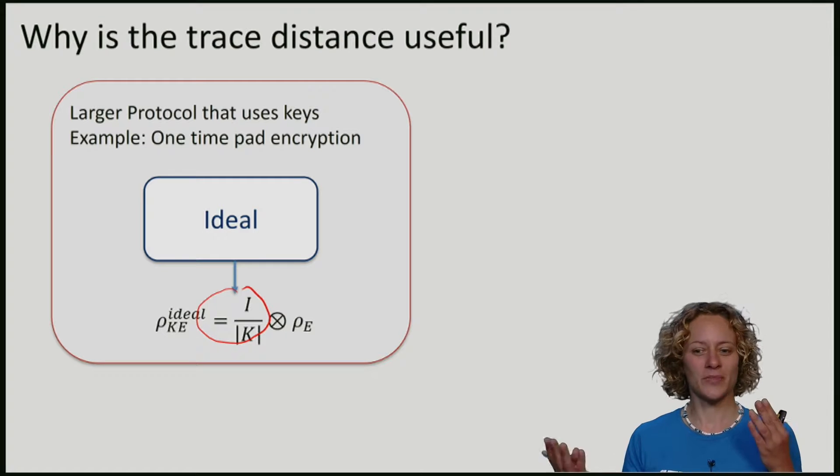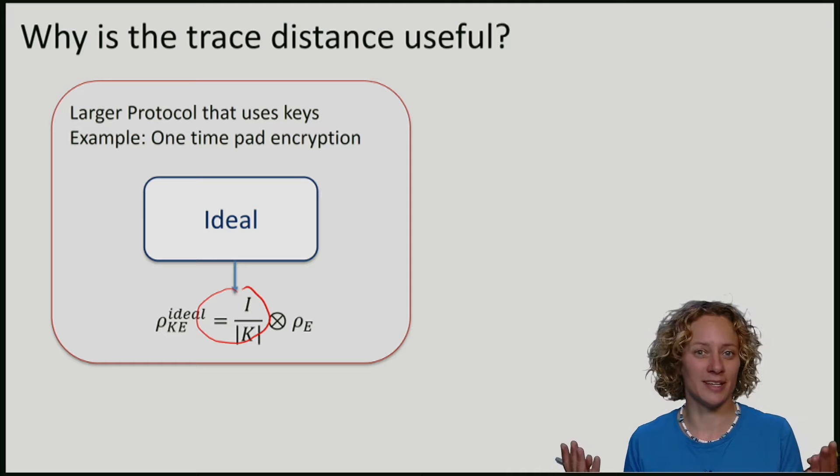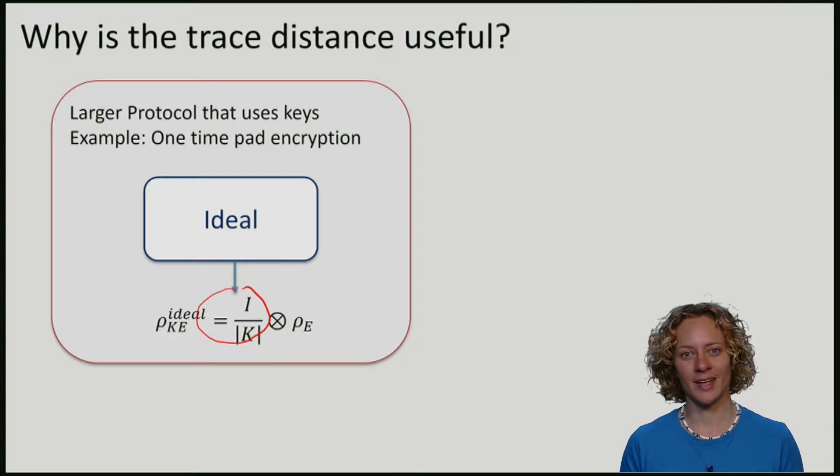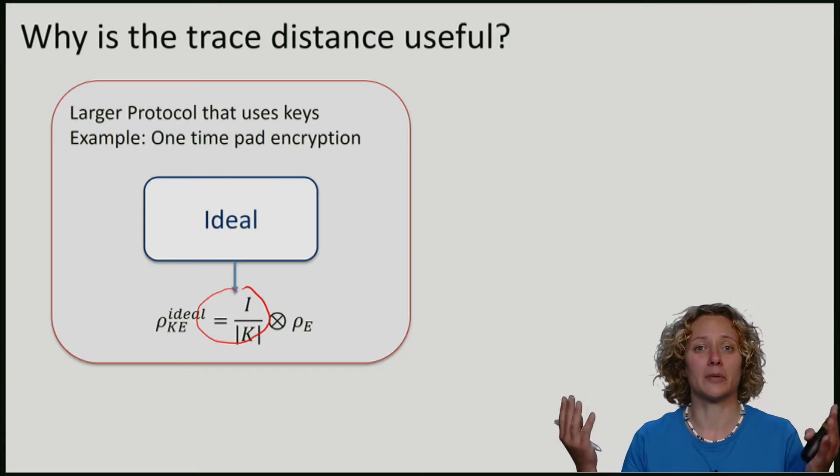Now, of course, if we actually have the real scenario, but we analyze it as if we were in the ideal setting, we might make an error. But the point is now that if the real state is close to the ideal one, then any measurement, there's no measurement that can tell the difference between real and ideal very well.